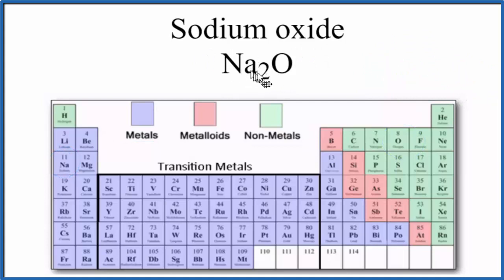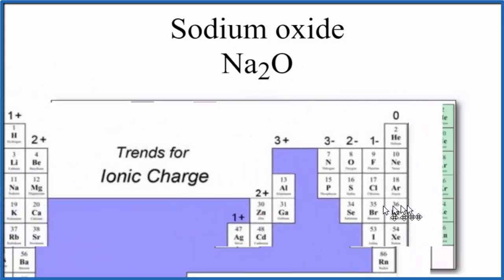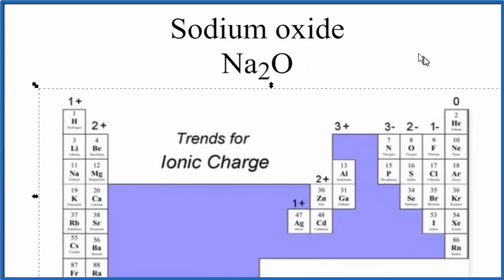You might ask why we have two sodium atoms and only one oxygen atom. Since we're dealing with an ionic compound, we need to deal with ionic charge. And we can look on the periodic table, this is divided up by ionic charge based on group.